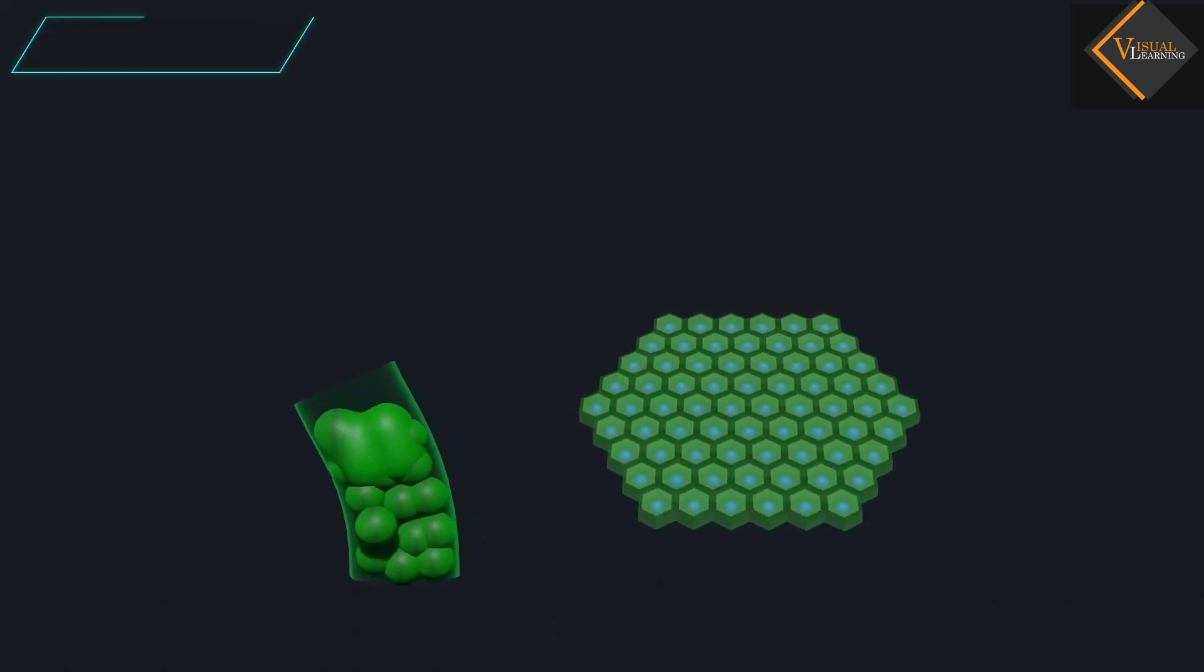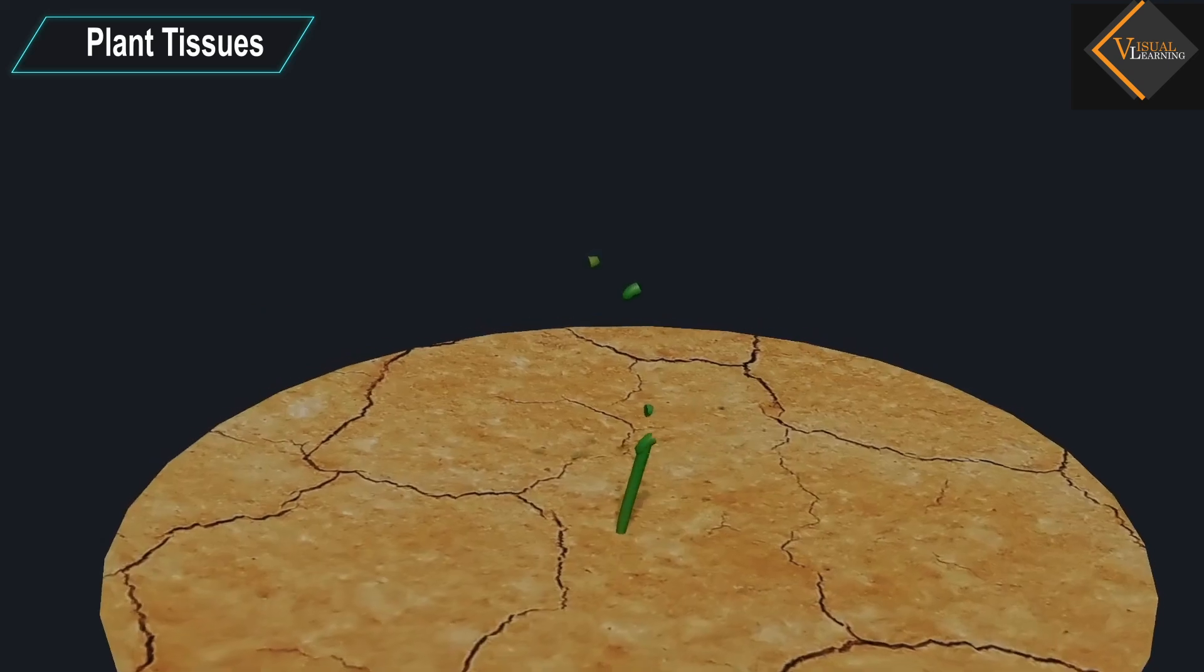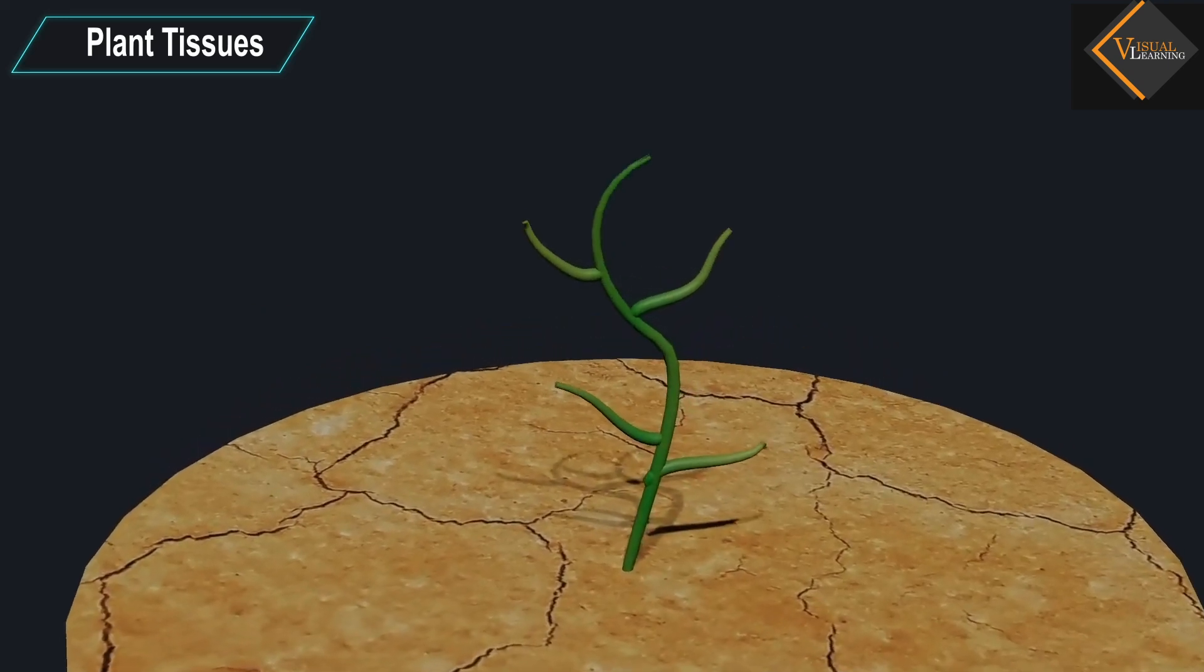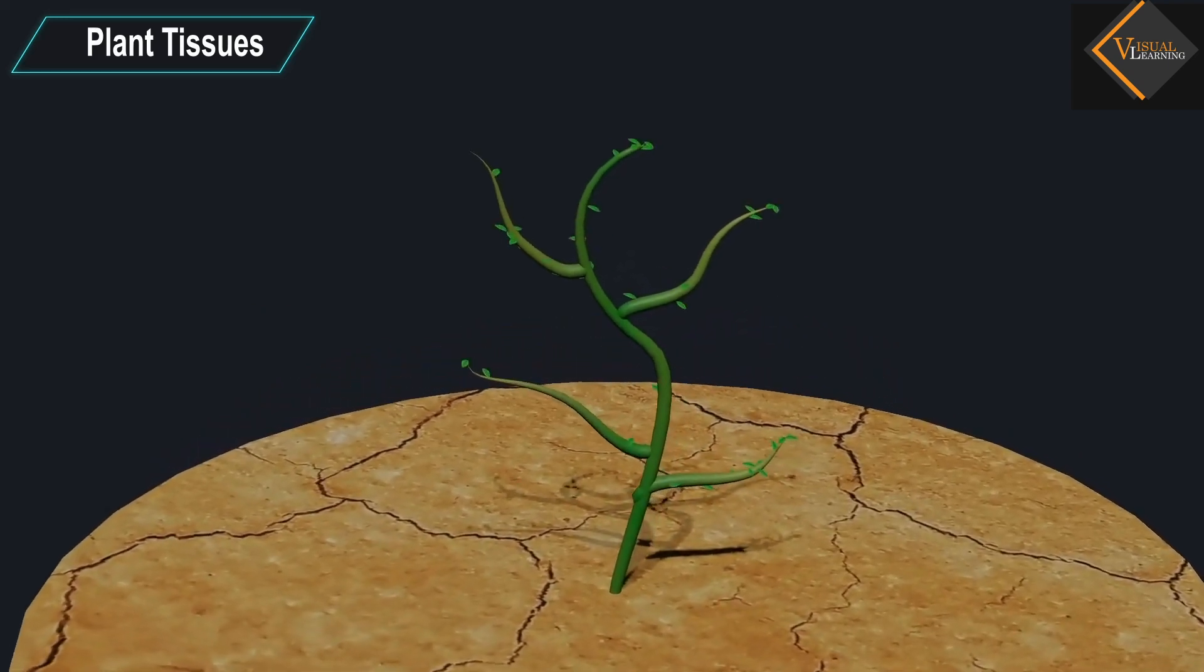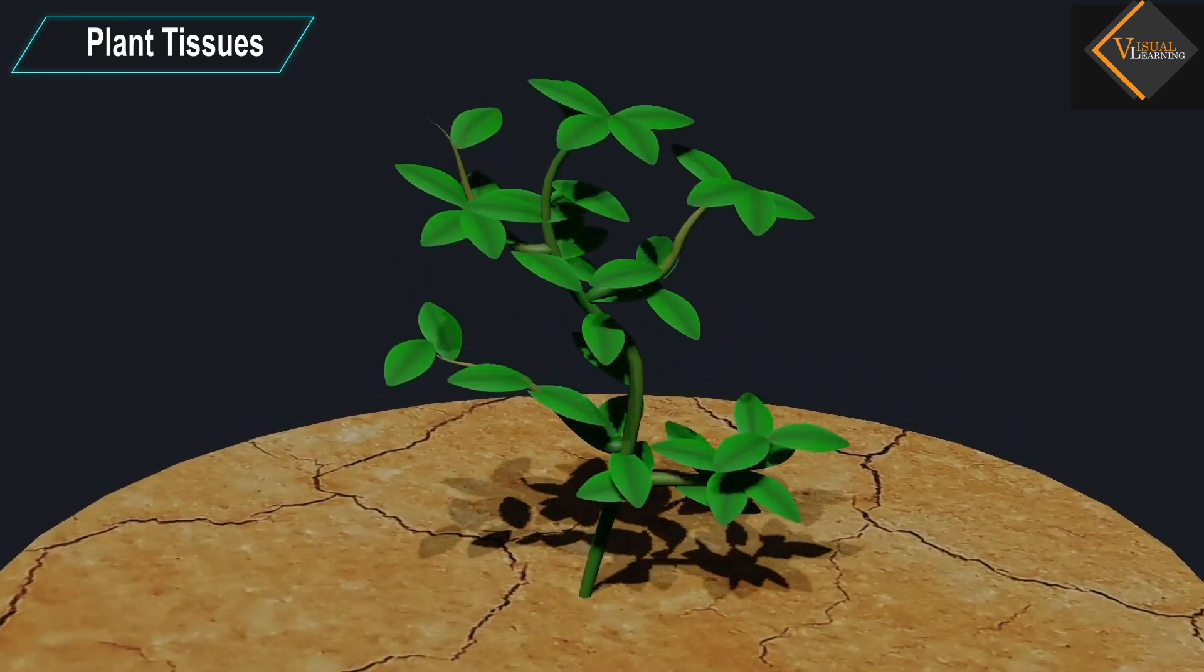In this video, we will understand about plant tissues. Plants are multicellular eukaryotes with tissue systems made of various cell types that carry out specific functions.